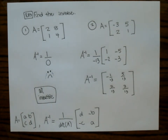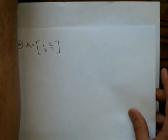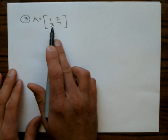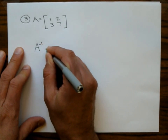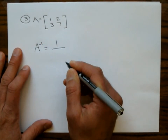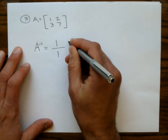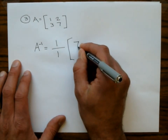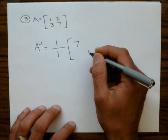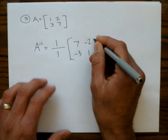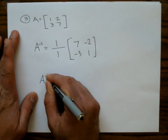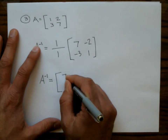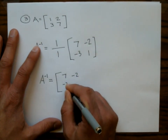Find the inverse of the matrix A = [1, 2, 3, 7]. A⁻¹ = 1 over the determinant. The determinant is 7 − 6 = 1, so 1 over 1. I switch my DNA: 7 goes top-left, 1 goes bottom-right. I negate B and C: −2 and −3. Since 1/1 = 1, A⁻¹ = [7, −2, −3, 1].